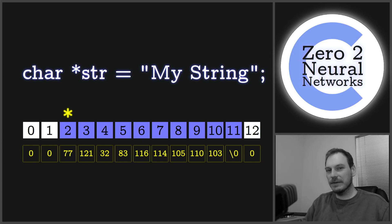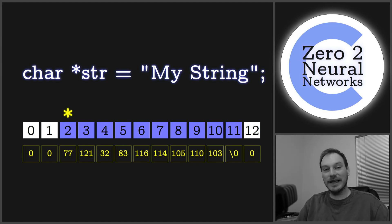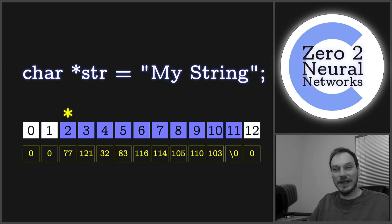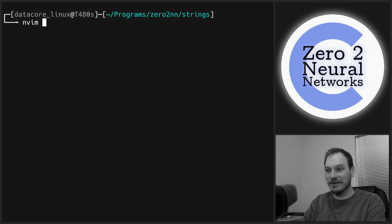Hello and welcome to C Programming Zero to Neural Networks. Today we're covering strings — strings are basically sequences of characters, so letters. Let's get straight to it.